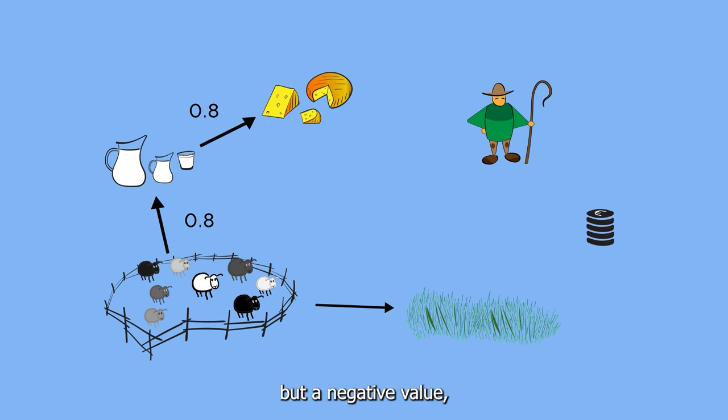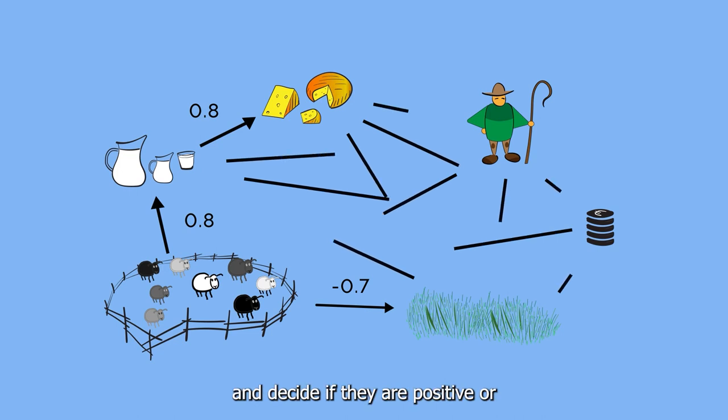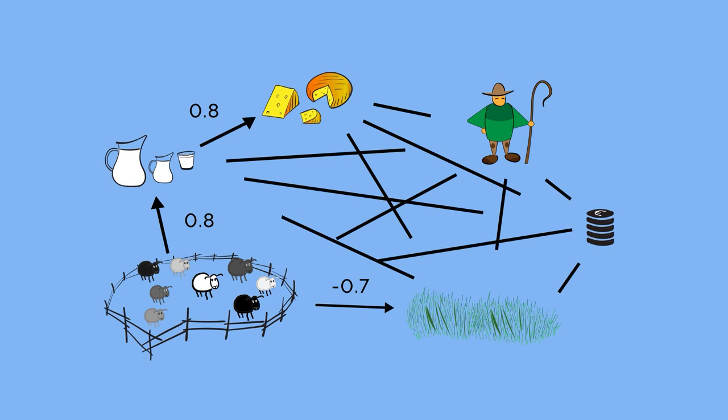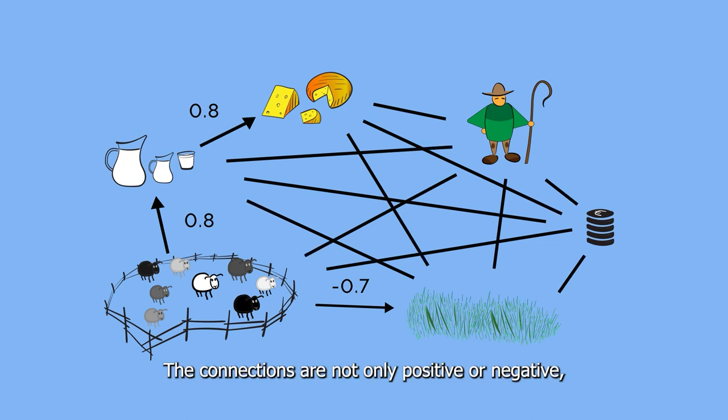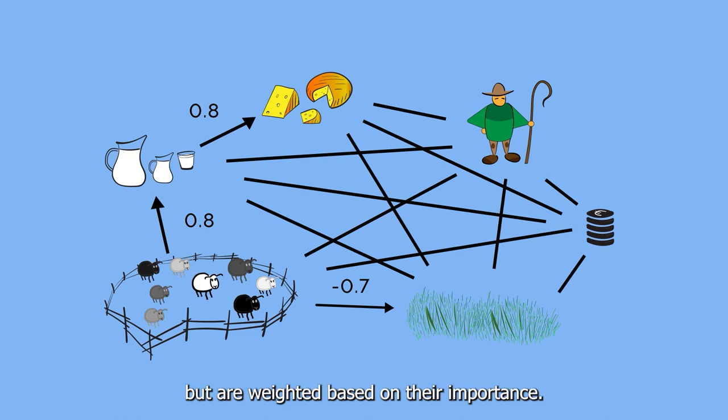Like minus 0.7. Following the same rationale, we can create the other connections, estimate their strength, and decide if they're positive or negative. The connections are not only positive or negative but are weighted based on their importance.